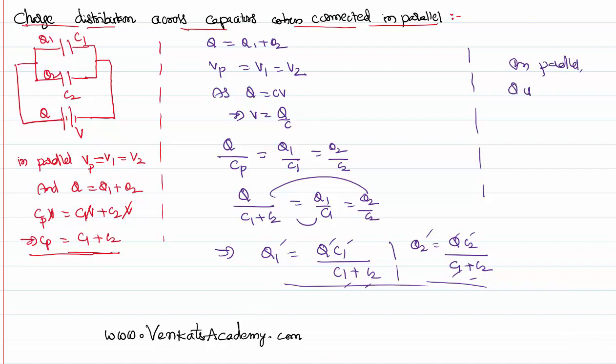So we can say in parallel, Q is distributed in such a way that charge is directly proportional to capacity. That means capacitors with more capacity will draw more charge when they are connected in parallel. That's how we can identify the charge distribution when the capacitors are connected in parallel.